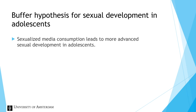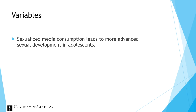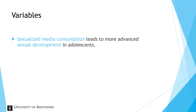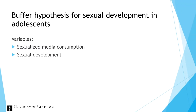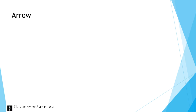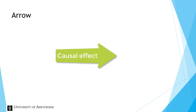We start off with identifying the variables in this sentence. The first variable is sexualized media consumption, and the second variable is sexual development. So far, we have identified two variables which we can put in a box. Next, we can draw arrows that represent causal effects.